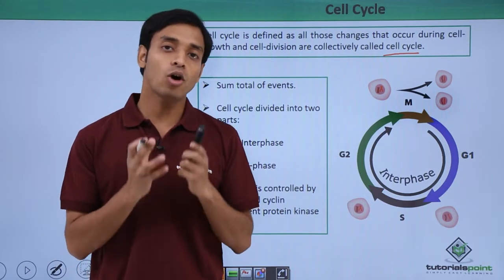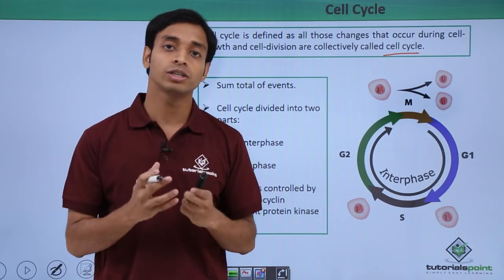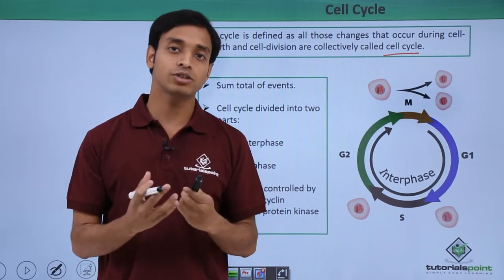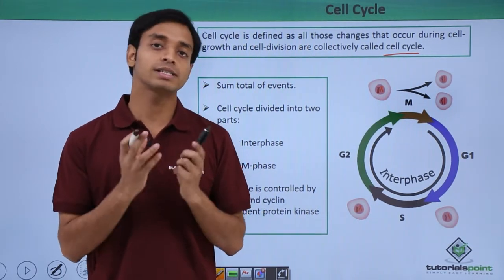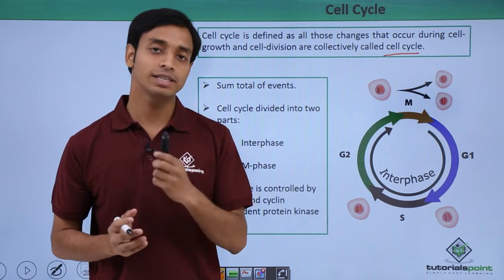Cell cycle is basically the sum total of all the events: the process of growth, the process of multiplication, the process of increase in size, mass, and volume. The sum total of all these events is known as the cell cycle.